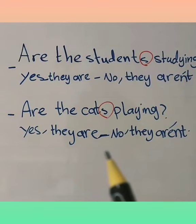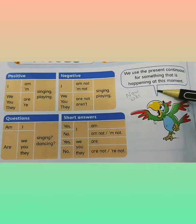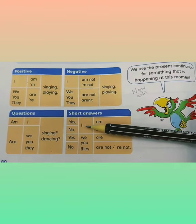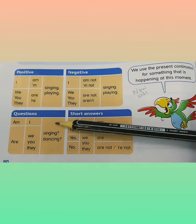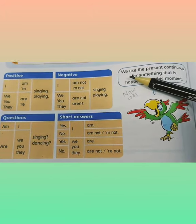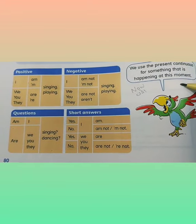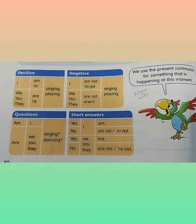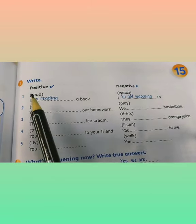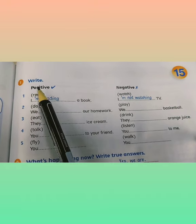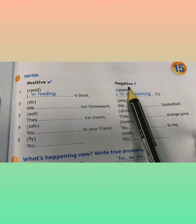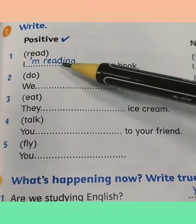Look at the example: No, they aren't. Look at the book — pages two and three. There we have a detailed explanation: Positive, Negative, Questions, Short answers. It shows the normal sentence, the negative, how to form a question, and how to answer it. We use present continuous for something that is happening at this moment.